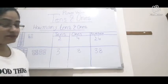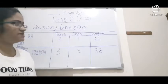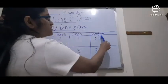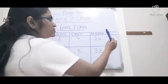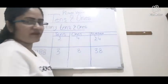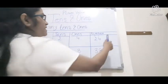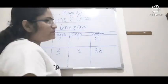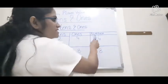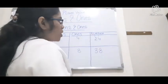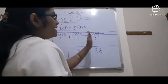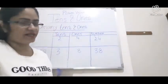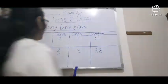Another strategy: in the 1s place we always write on the right side of the number, and the 10s place is always on the left side of the number.